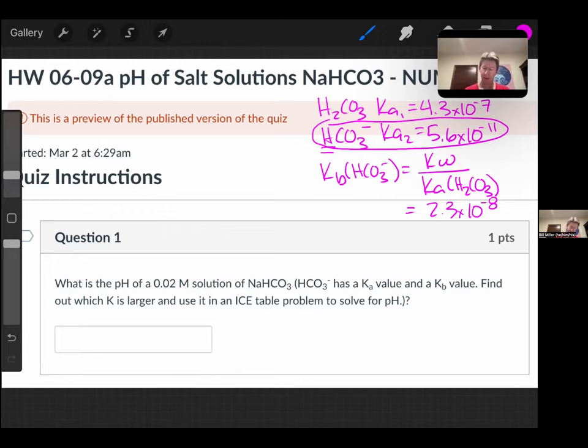So from here, Kb value is going to be bicarbonate plus water. It's a Kb reaction, so the product is going to be hydroxide and carbonic acid.